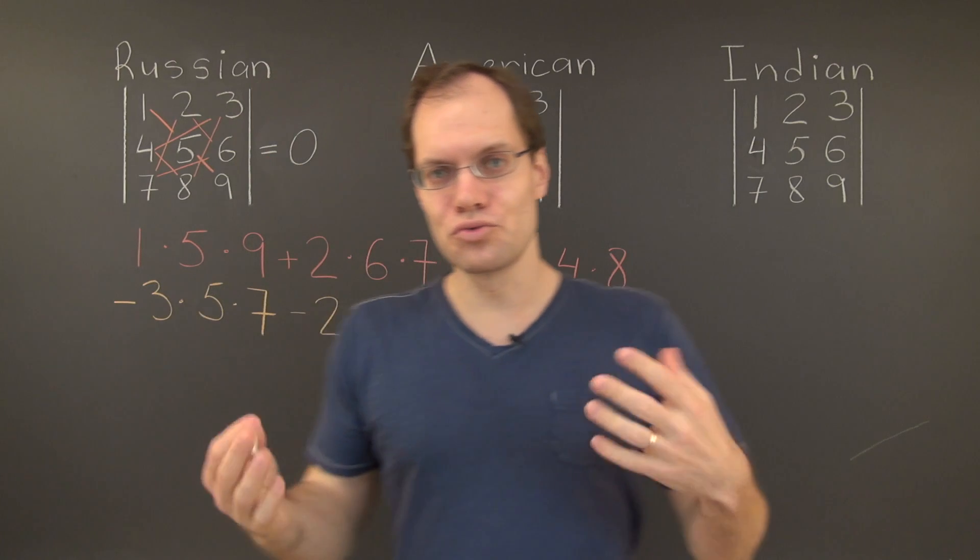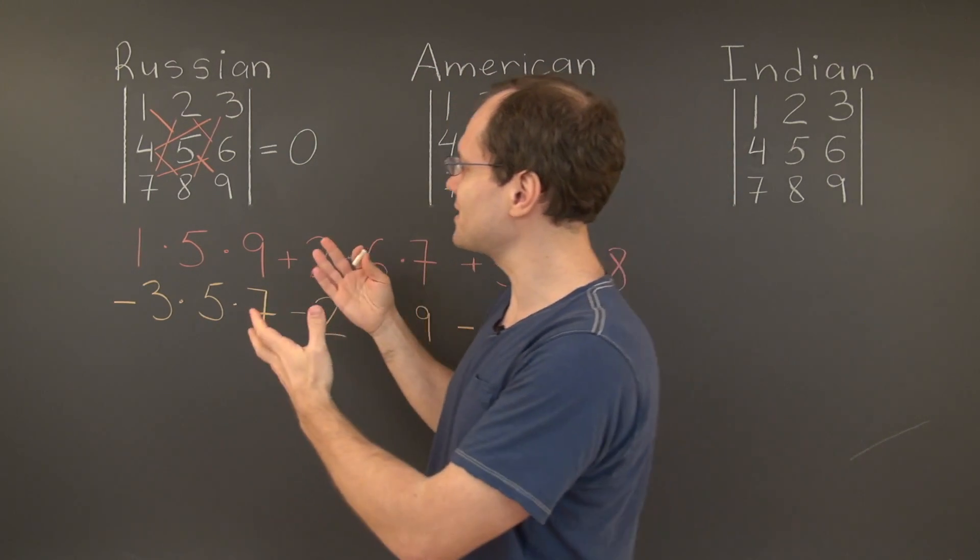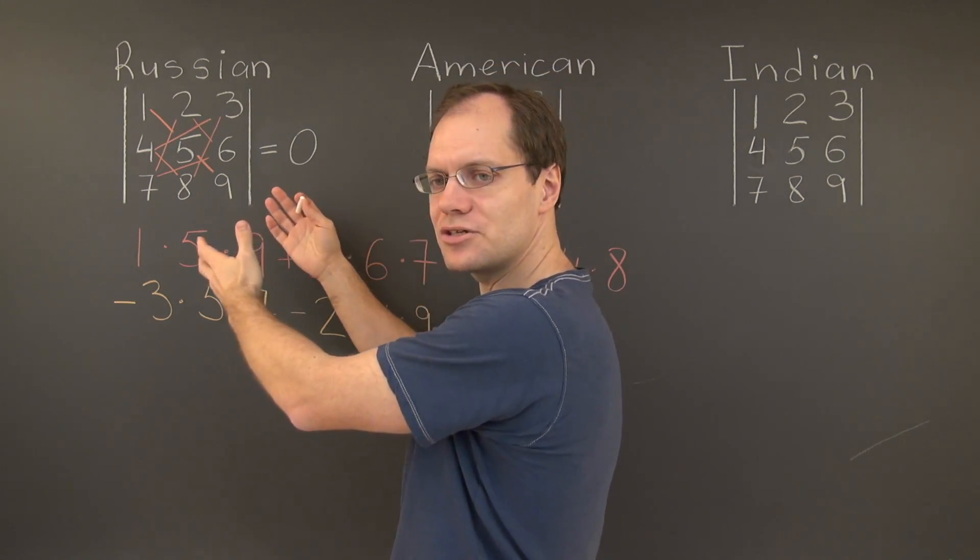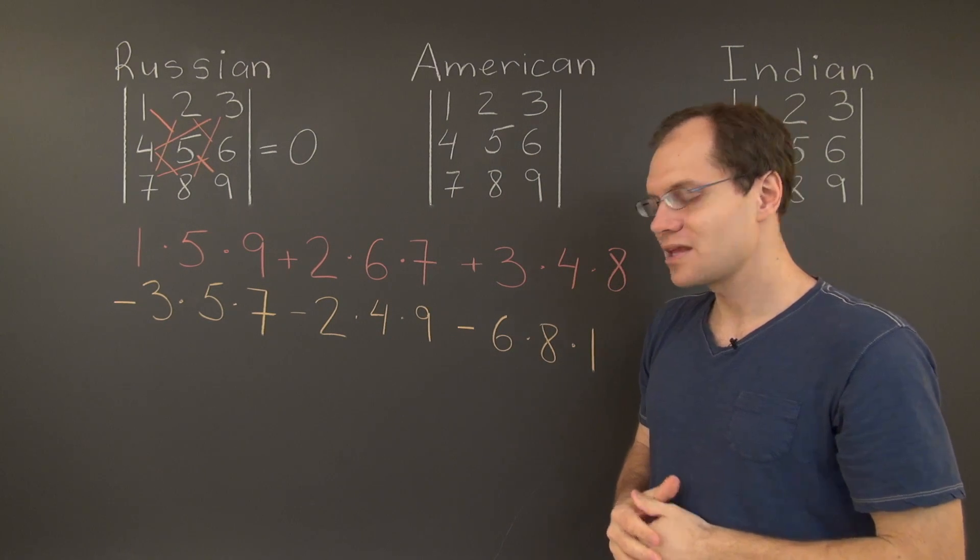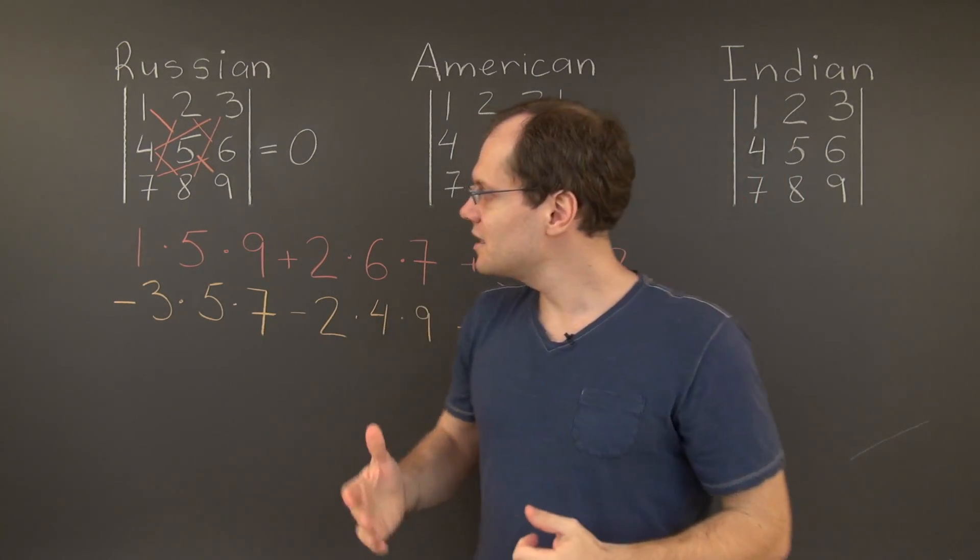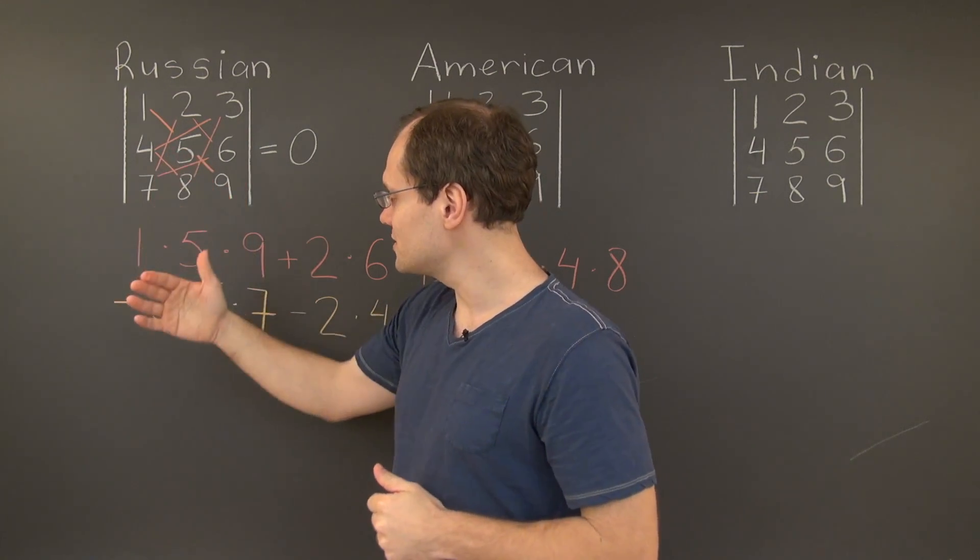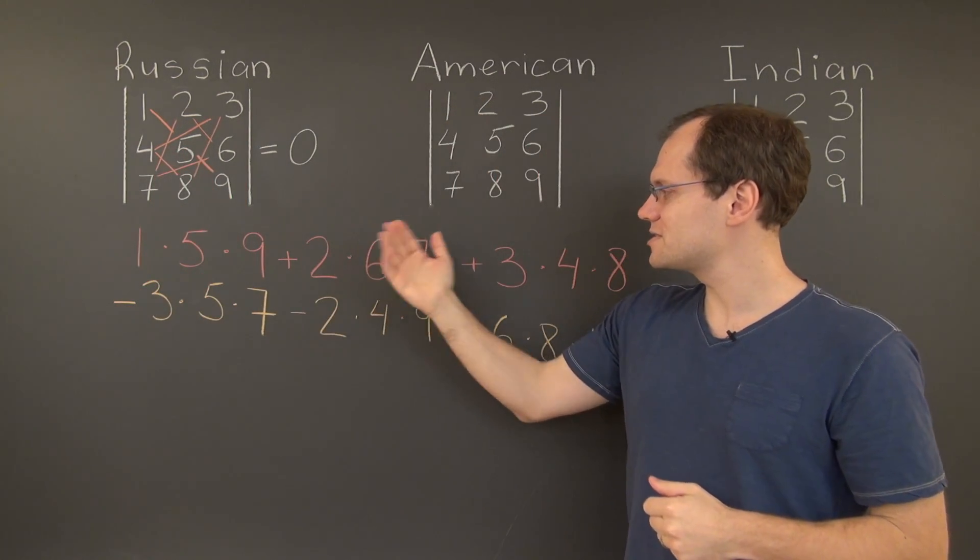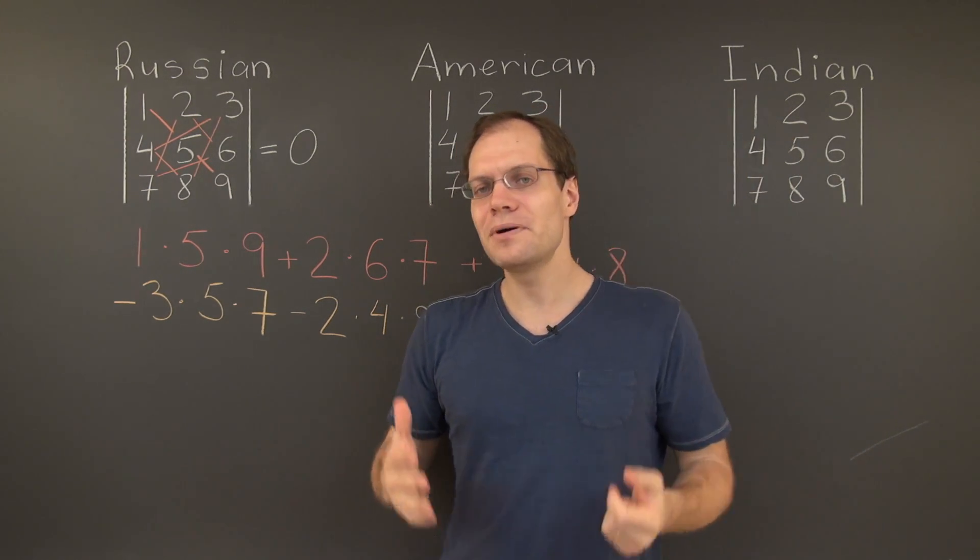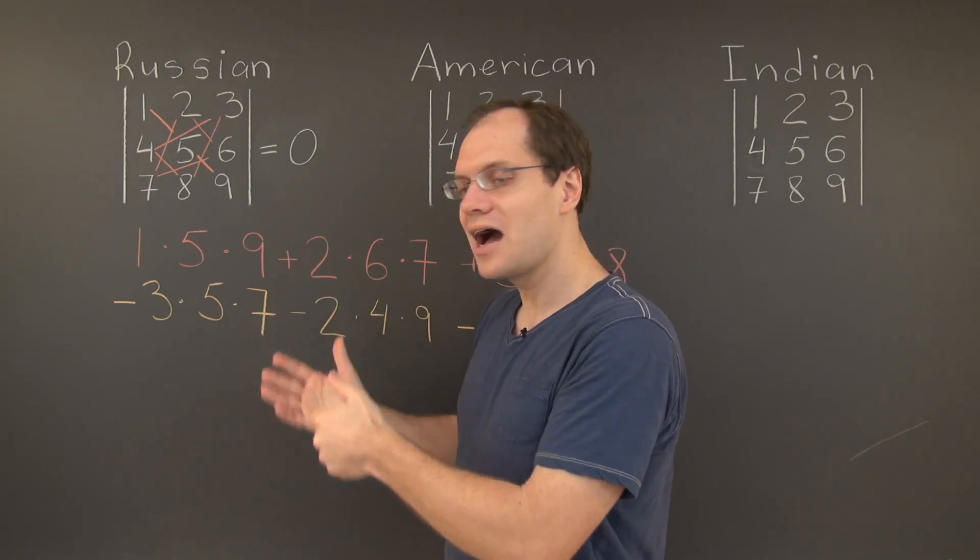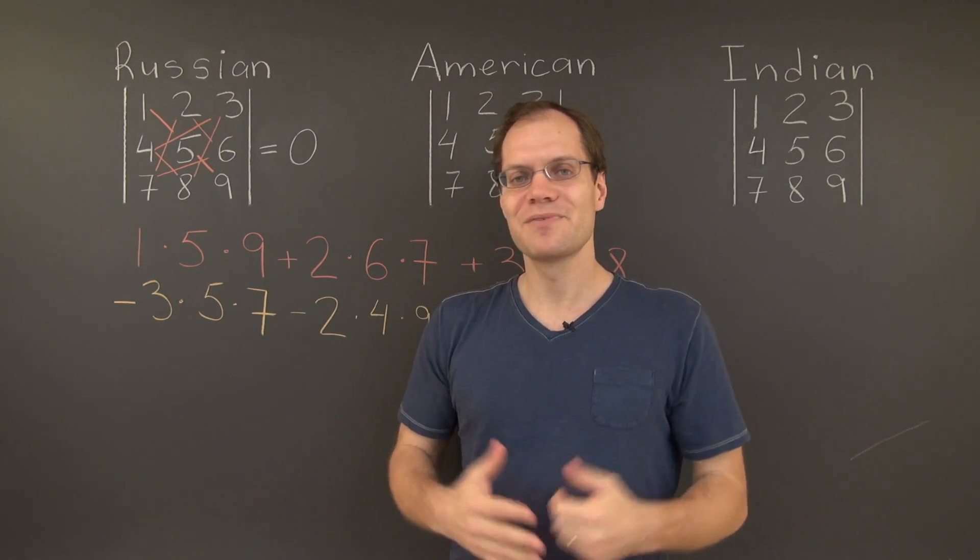This is the Russian approach to three by three determinants. Its advantage is its directness. You simply look at the matrix, pick out exactly what you need, and then complete the calculation. The disadvantage is that you might consider these patterns to be somewhat complicated. And then after all is said and done, you're still left with some multiplications and some additions. So those are the disadvantages. But I think that the advantage of its directness outweighs the disadvantages. So on the balance, it's not bad.